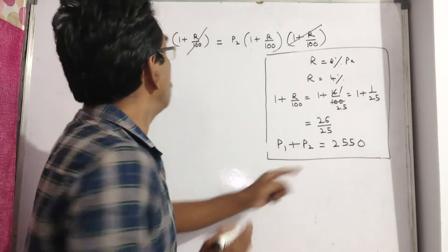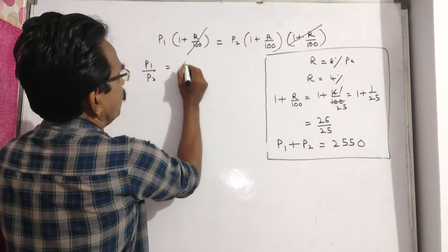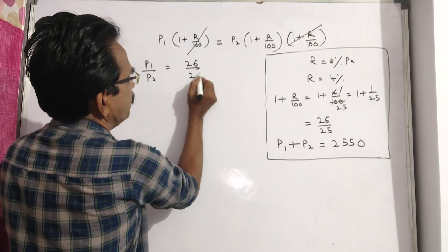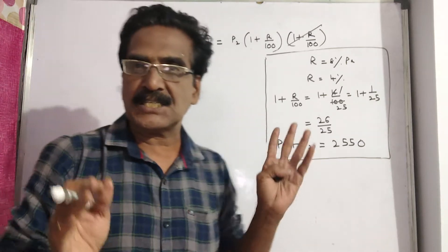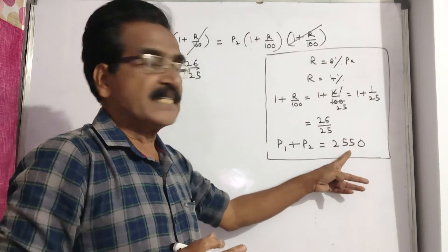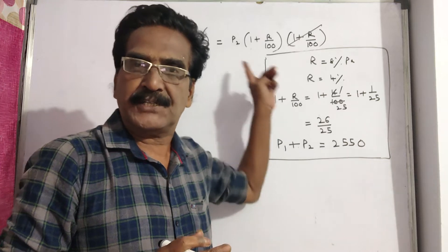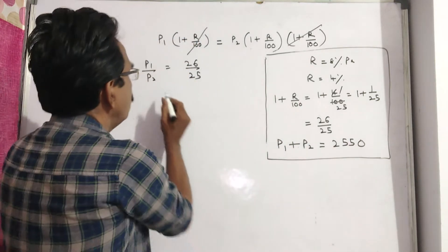We know P1 plus P2. P1 by P2 equals 1 plus R by 100, which is 26 by 25. We know the ratio of P1 and P2 is 26 to 25. So let us divide 2550 in the ratio 26 to 25 to get P1.